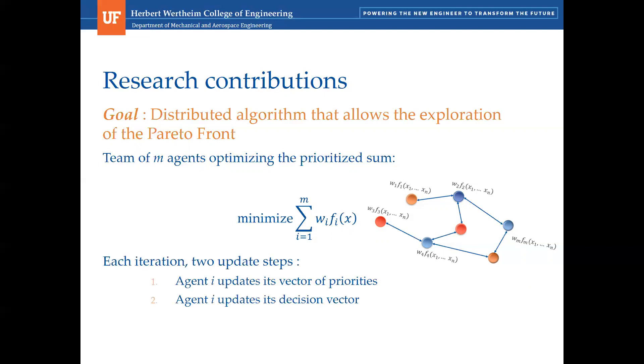We devise an update law that drives agents to a common solution by interlacing optimization steps with priority averaging steps. Also, this interlacing optimization allows agents to continuously modify their priorities based upon the task at hand. Therefore, at each iteration, there are two steps. First, agent i updates its vector of priorities. And second, agent i updates its decision vector.